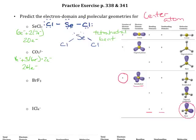We'll do this the same way we always would. We put carbon in the center and attach the 3 oxygen atoms with single bonds, using 6 electrons for the bonds. Then we place the remaining electrons around the outside atoms first. After filling all 3 oxygens with lone pairs, we'll have used all 24 electrons.